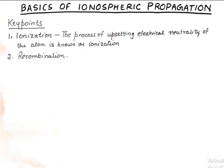I have written down a few key points here. The first key point is ionization — it is the process of upsetting the electrical neutrality of the atom. What happens is there are some free atoms in the atmosphere which are bombarded by the rays of the sun or by alpha or beta rays.